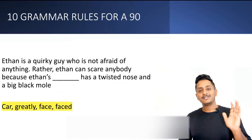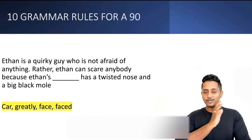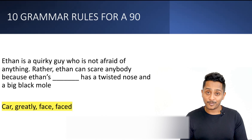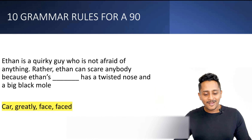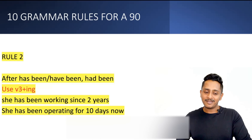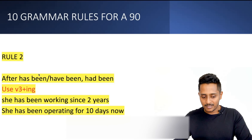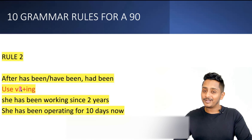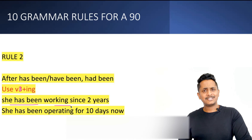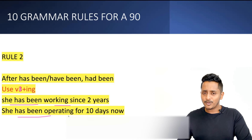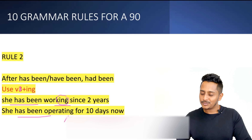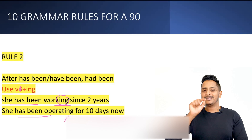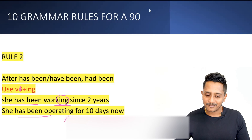At the end we have a quiz of 15 questions incorporating all 10 tips. So make a note of everything — it's learning, not just watching. Rule number two: after 'has been', 'have been', 'had been', verb plus '-ing' will come. 'She has been working', 'I have been taking classes since five and a half years', 'She has been operating for 10 days'. After 'has been / have been / had been', use the '-ing' form.